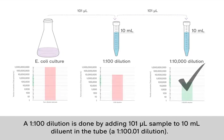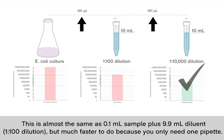To do a 1 to 100 dilution, you can simply add 101 microliter of sample to the 10 mL diluent in the tube. This is almost the same as 9.9 plus 0.1, but it's much faster to do because you only need one pipette.